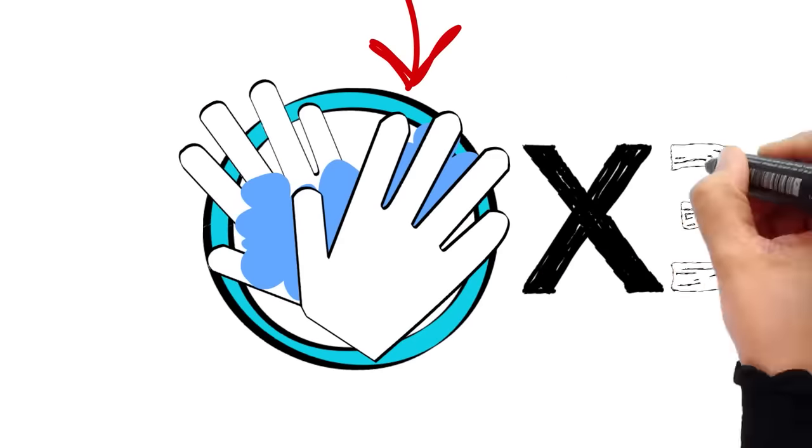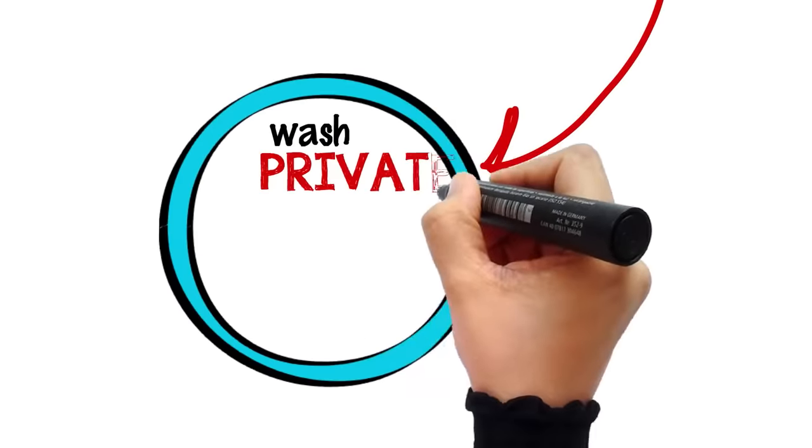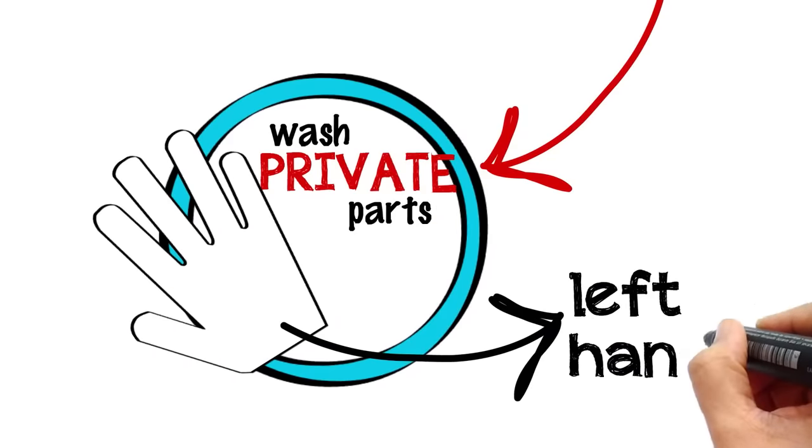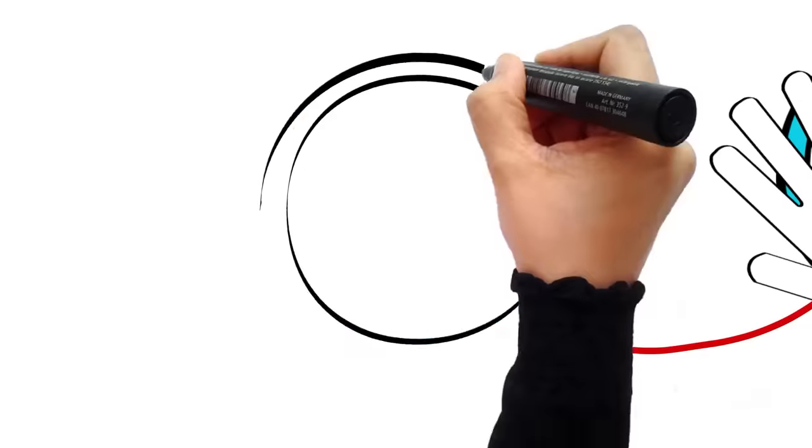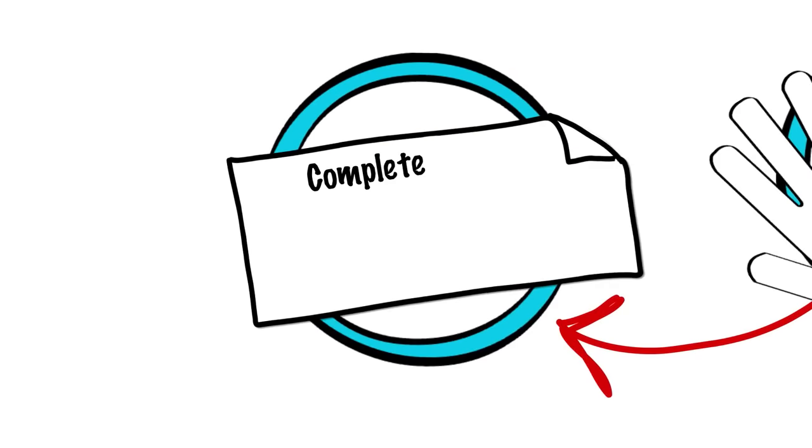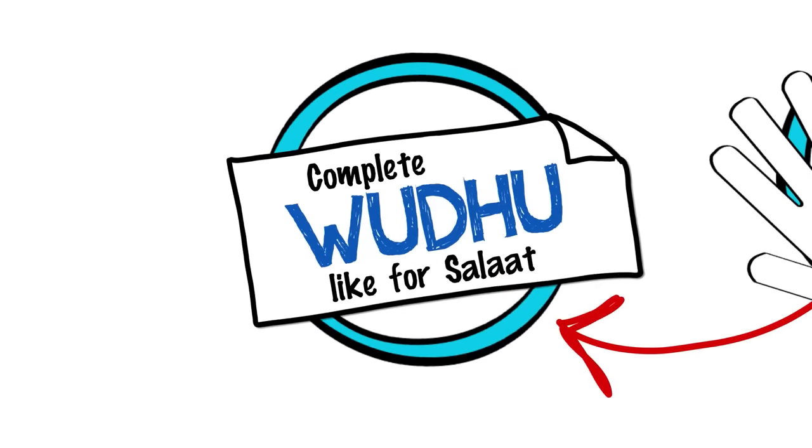Wash your hands three times. Then with your left hand, wash your private parts and anywhere else that is contaminated with traces of impurity. Then make a complete Wudhu, just as you would for prayers.